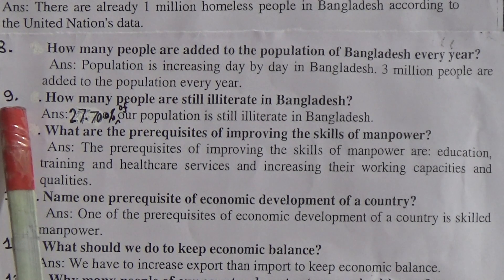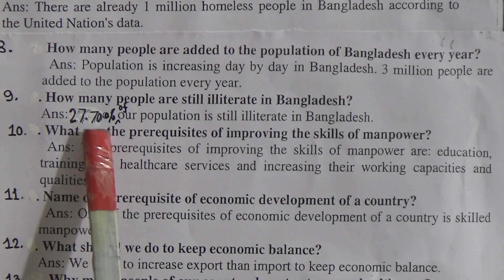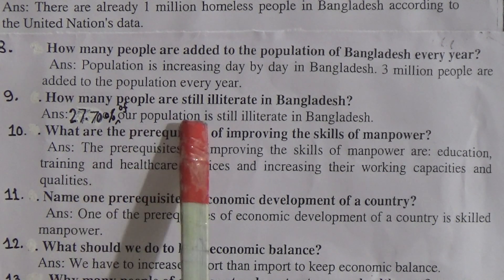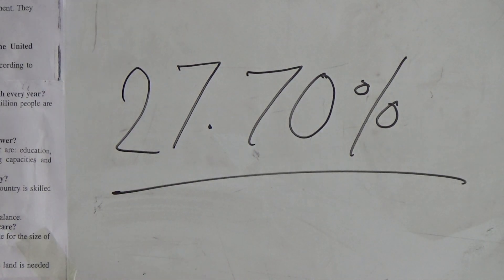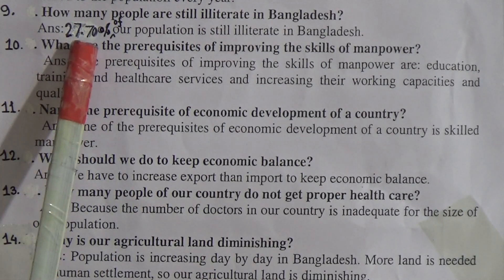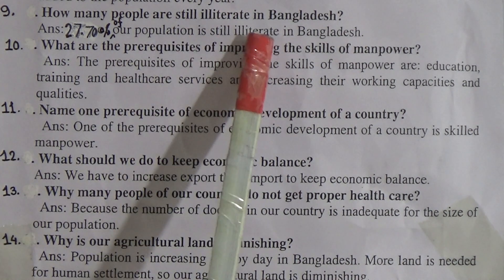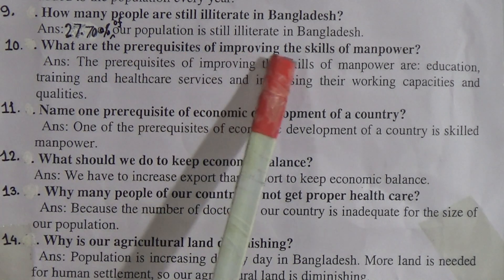Question Number Nine: How many people are still illiterate in Bangladesh? Answer: 27.70% of our population is still illiterate in Bangladesh.